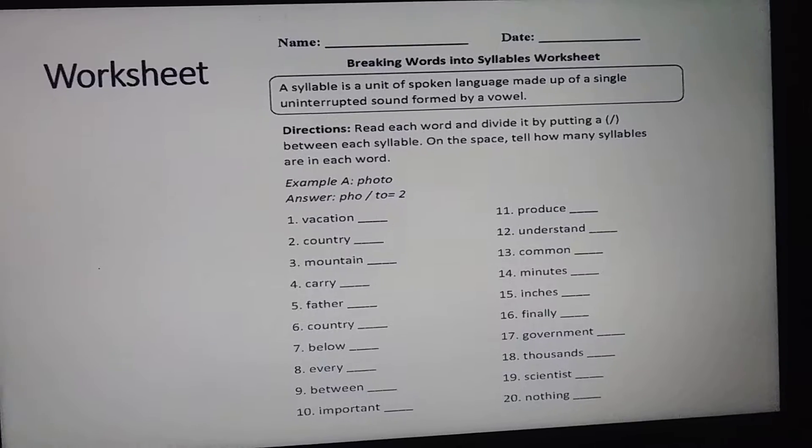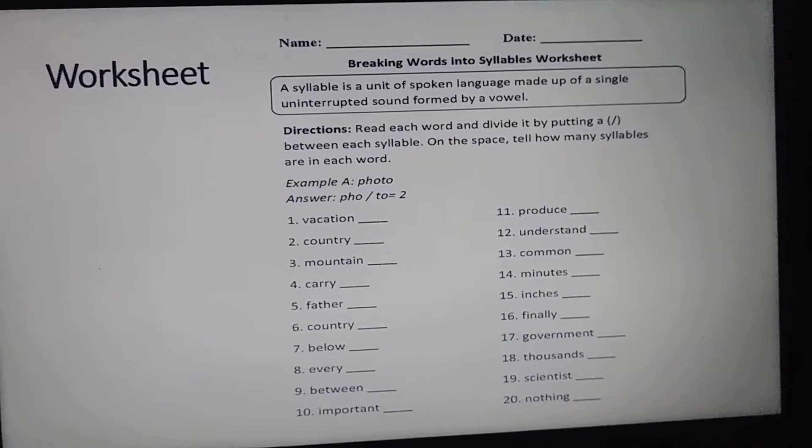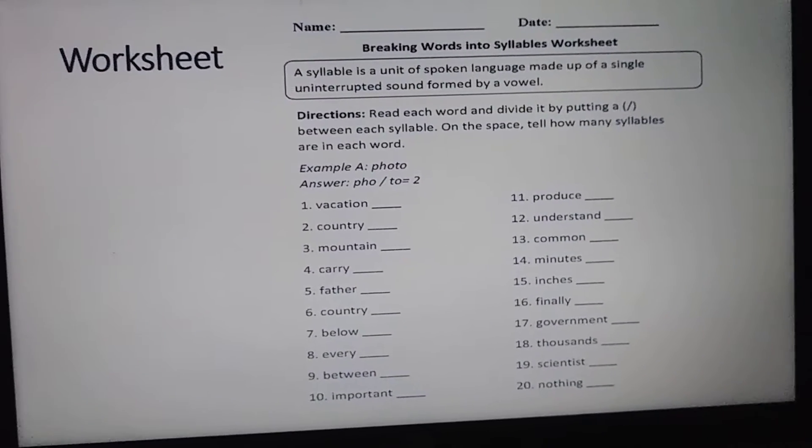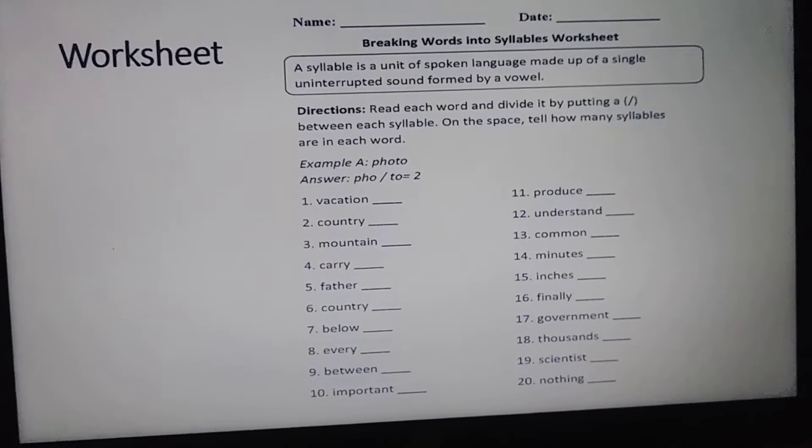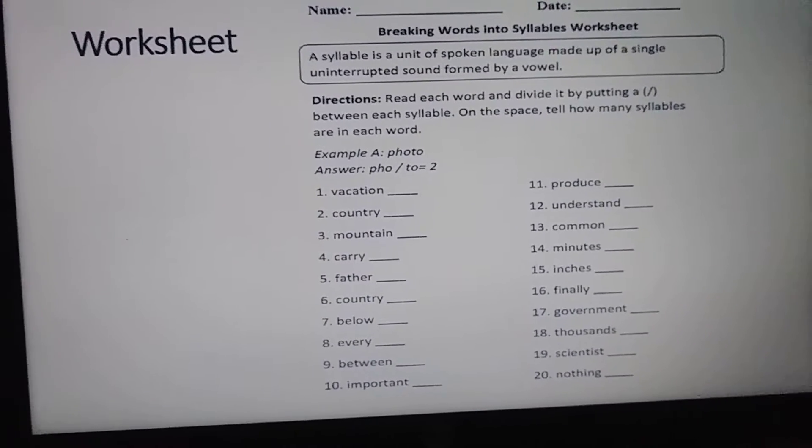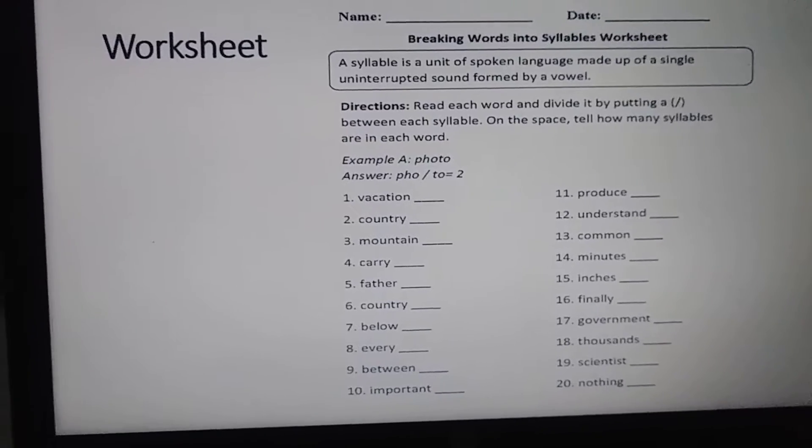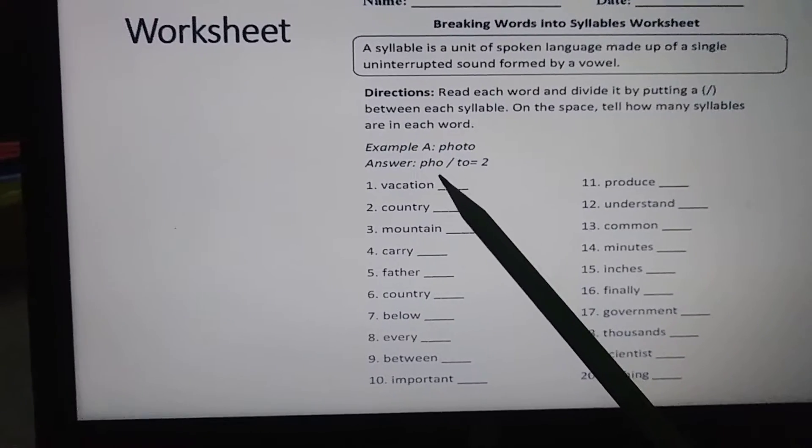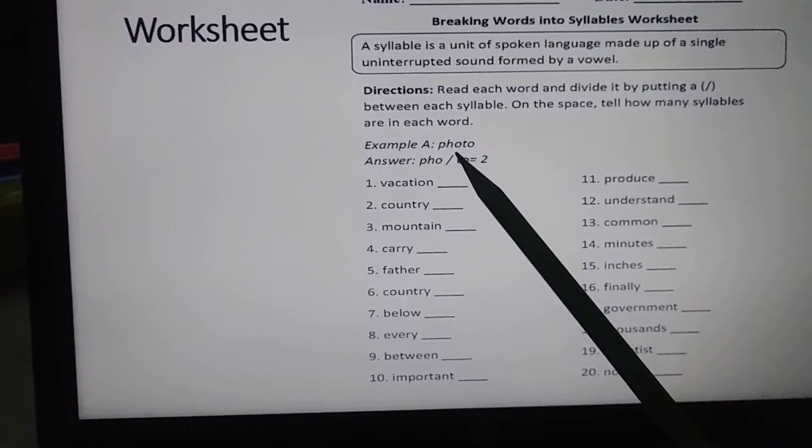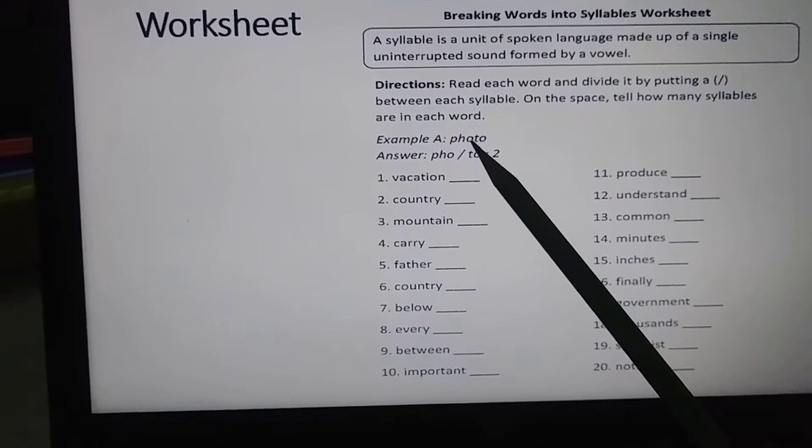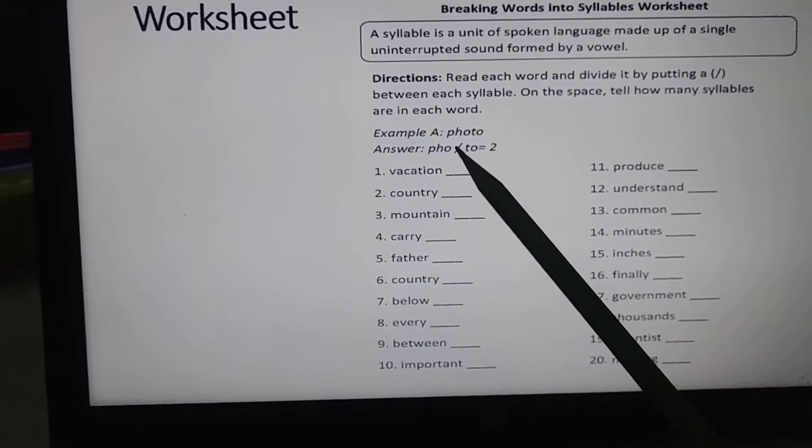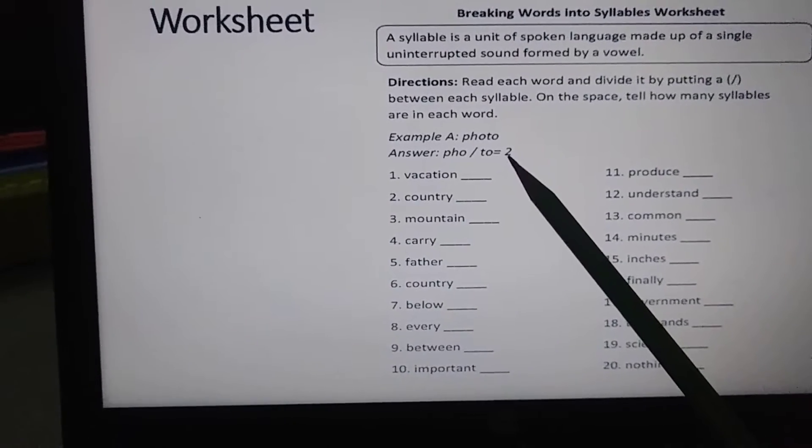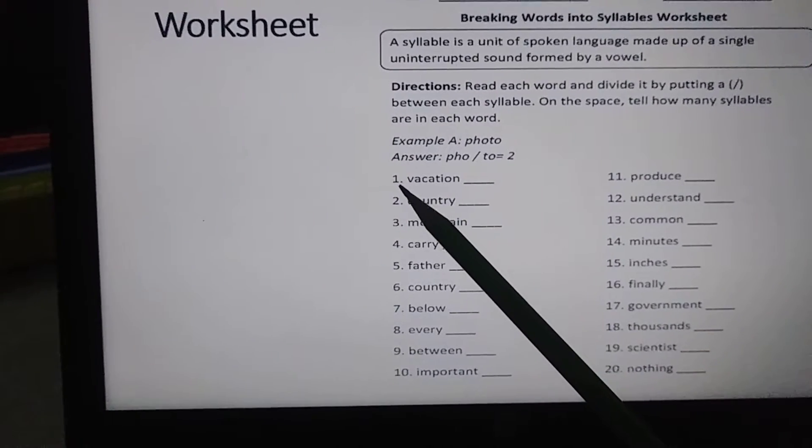What I want you to do is this worksheet. In this worksheet we are going to read each word and divide it by putting a slash between each syllable. On the space, tell how many syllables are in each word. For example, photo - there is a slash between this one and there are two syllables. There are two vowels in it so that means there are two syllables.